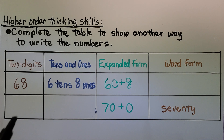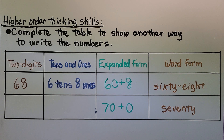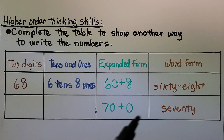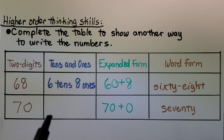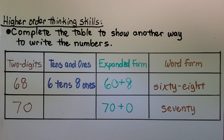We can write 68 in word form — sixty-eight — remembering the hyphen because it ends with 8. The two-digit number and tens and ones are missing for the next number, but we can see it is 70. We write 70 as a two-digit number, and as tens and ones: seven tens and zero ones.